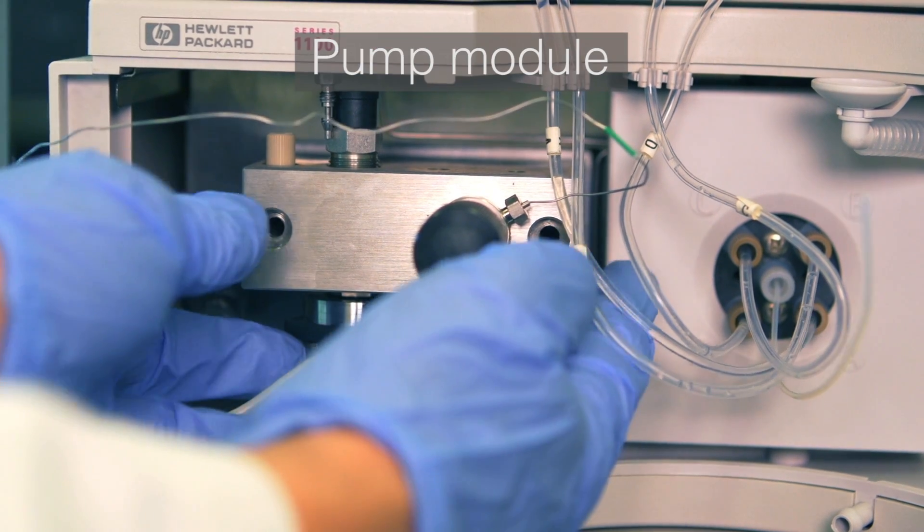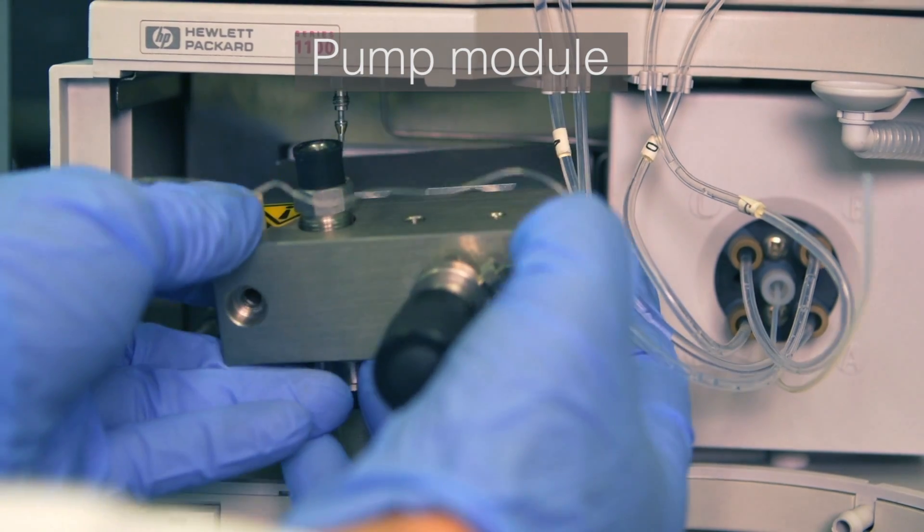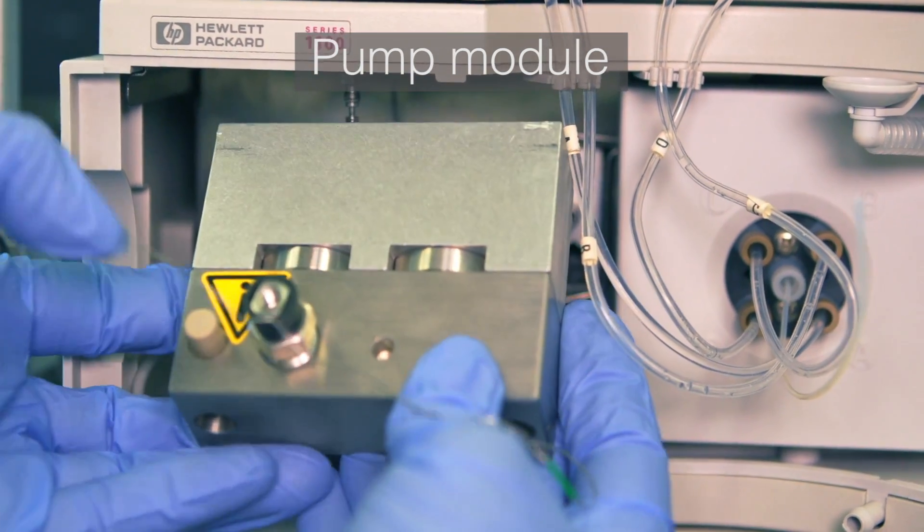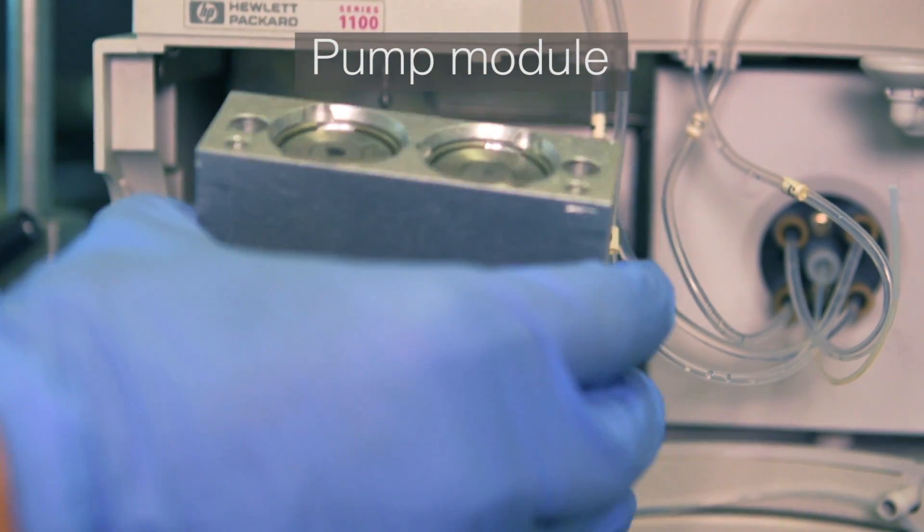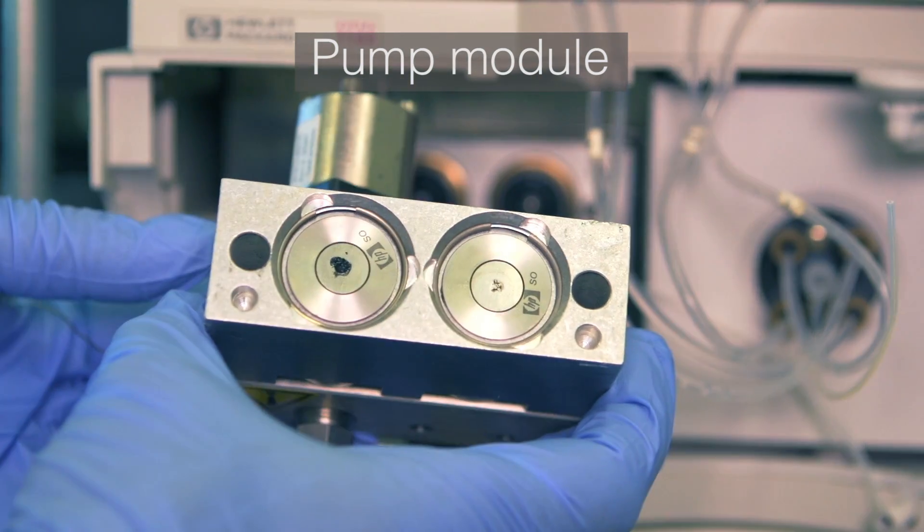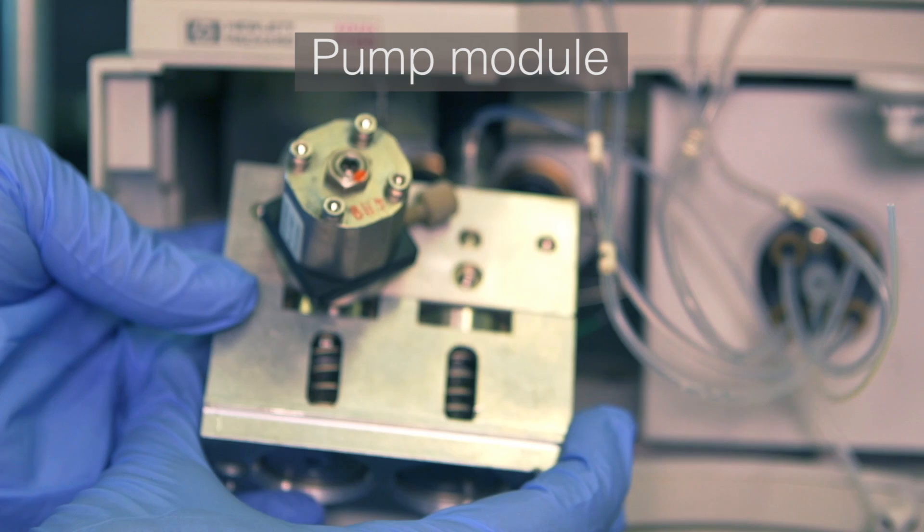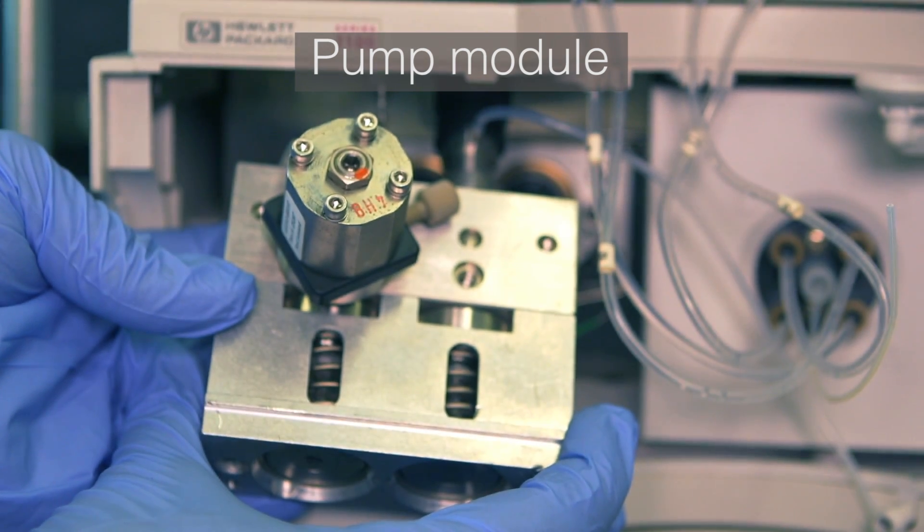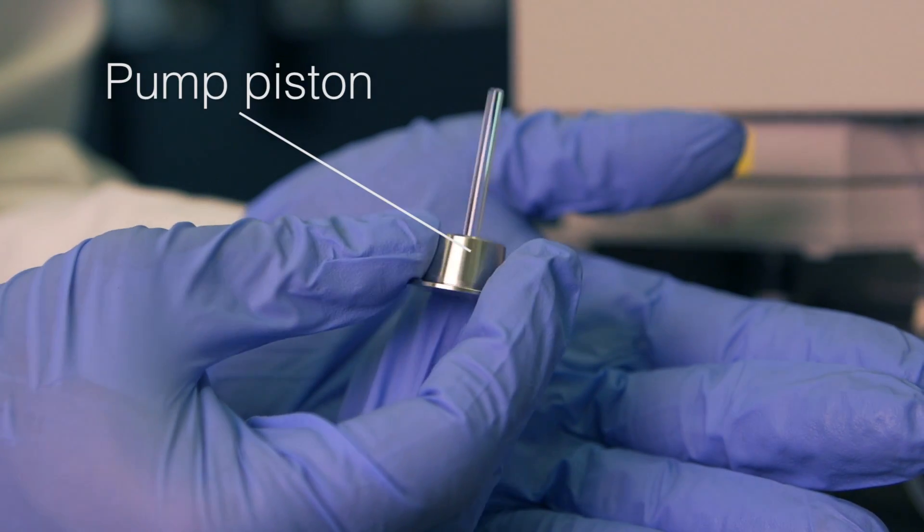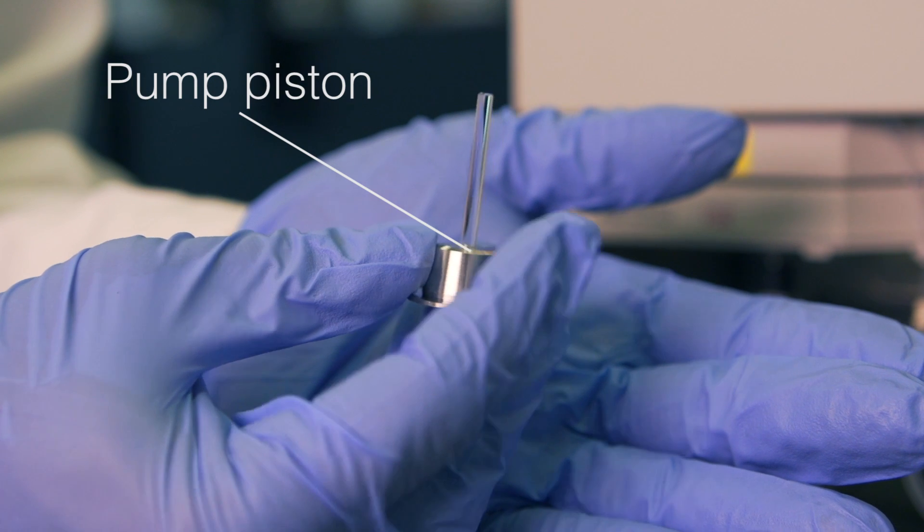A high pressure pump pushes the solvent through the analytical column at a steady flow rate. While the mobile phase is being pumped through the system, the sample is injected into the injector.